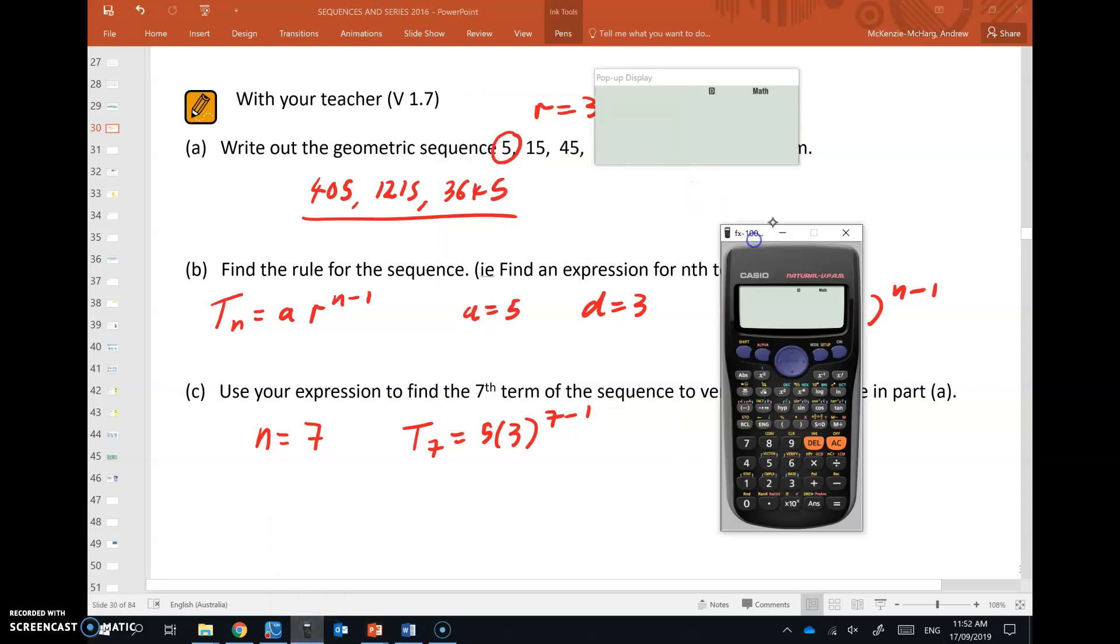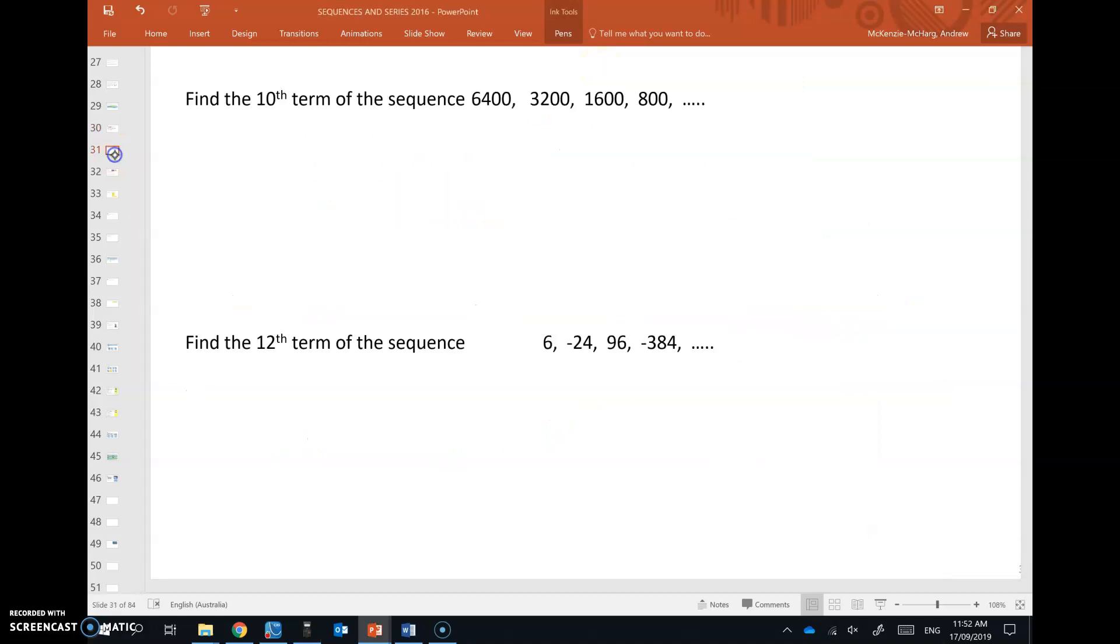Okay, so if we put that into the calculator, 3 to the power of 7 minus 1 gives the 3645 that we found earlier.